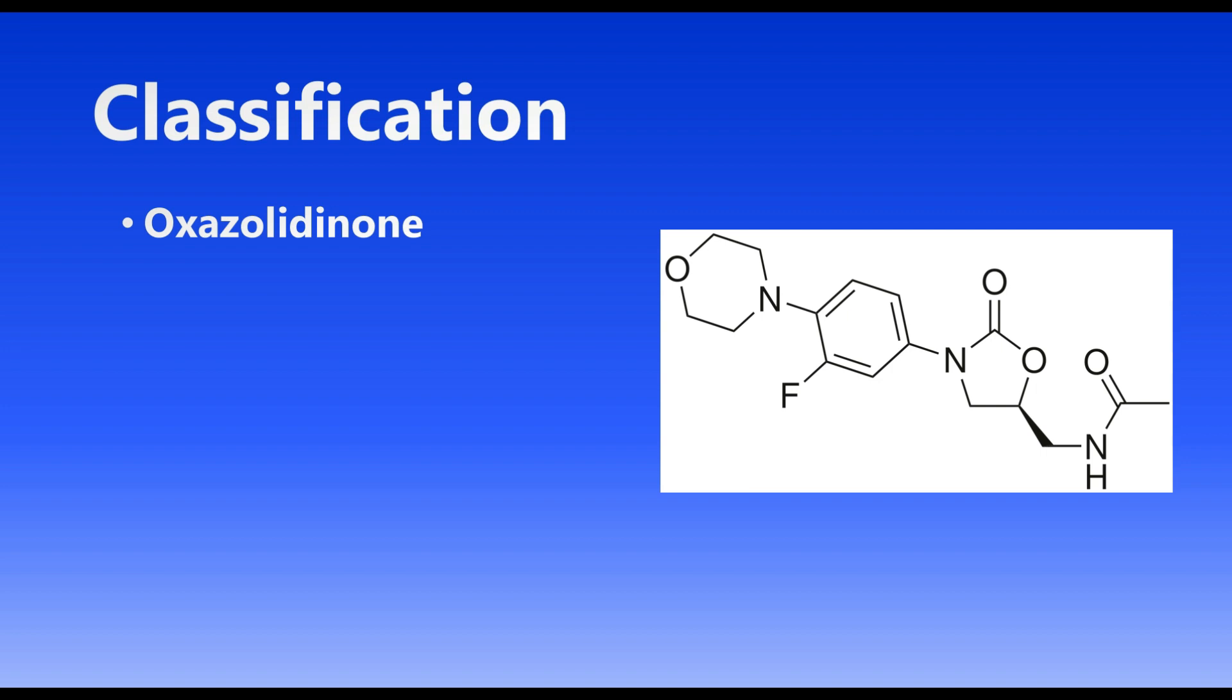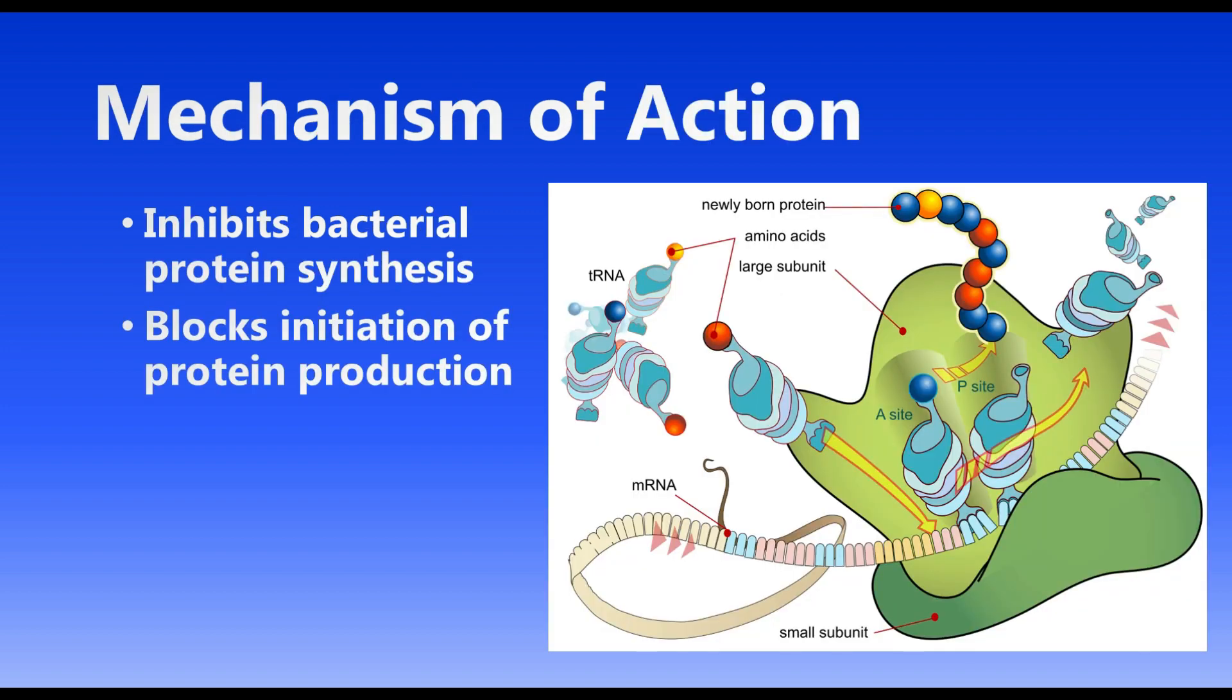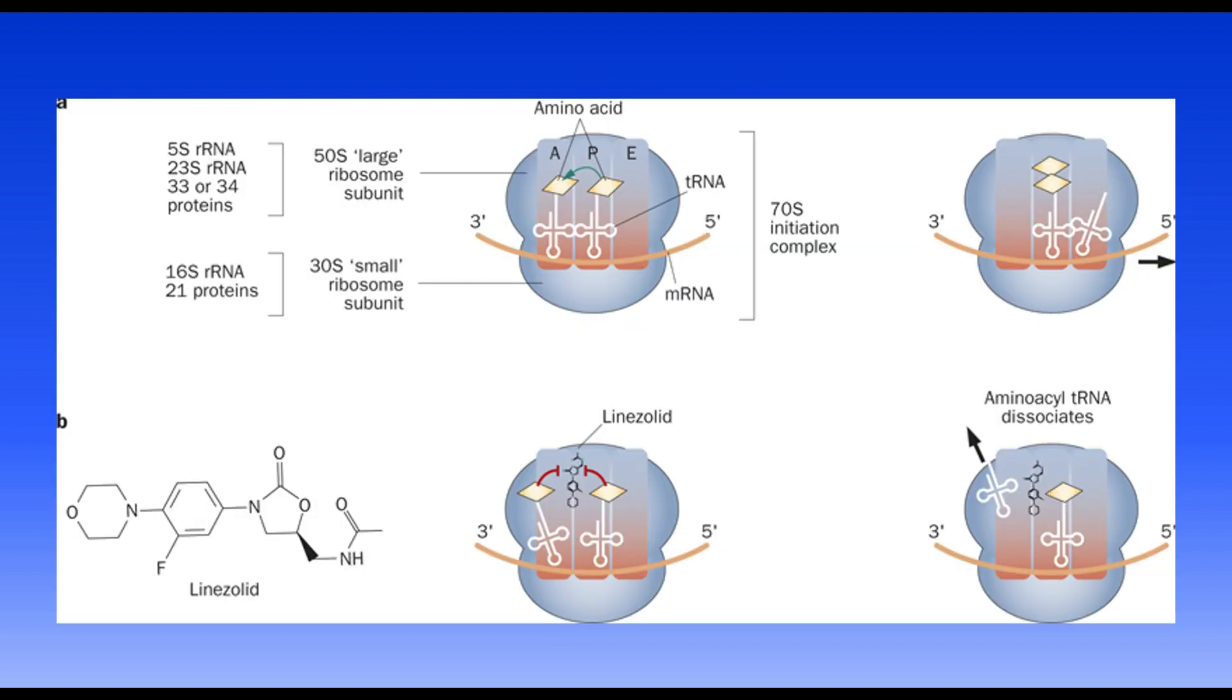In terms of the mechanism, the main area that Linazolid acts on is bacterial protein synthesis. As you may recall from college microbiology, there are three steps of protein synthesis: initiation, elongation, and termination. Linazolid acts to block initiation of protein production. It inhibits that first step so bacteria can't produce the proteins necessary for their survival.